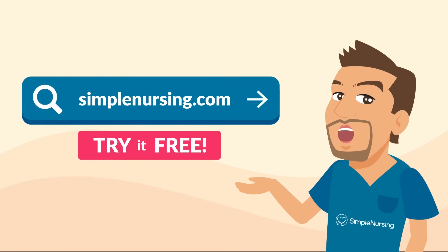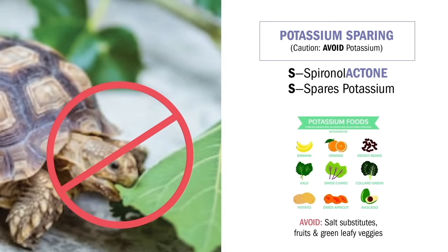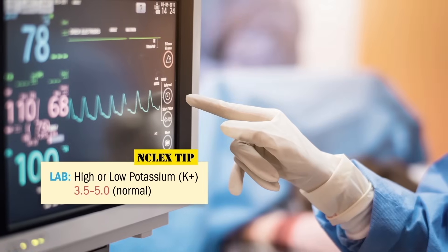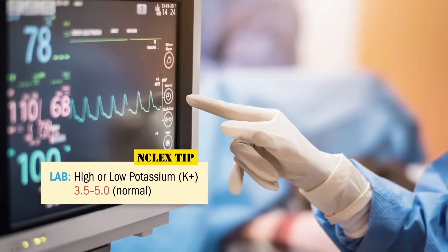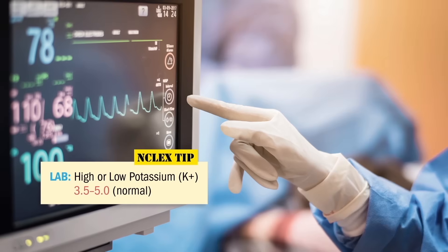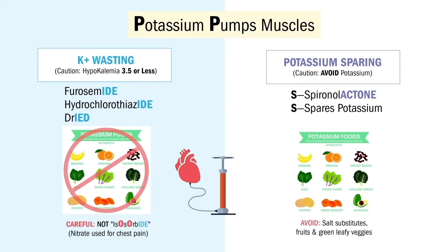Since spironolactone spares potassium, we teach patients to avoid potassium-rich foods — no green leafy vegetables, melons, avocados, and avoid salt substitutes. For any potassium abnormality, the first nursing action is to place the patient on a cardiac monitor — always asked on the NCLEX as a priority intervention.